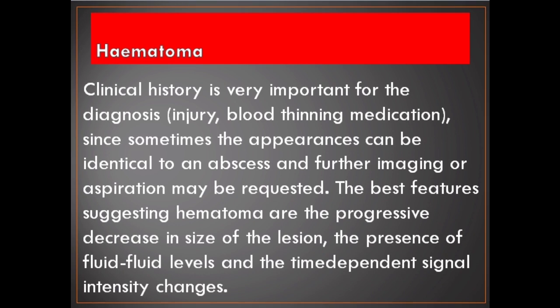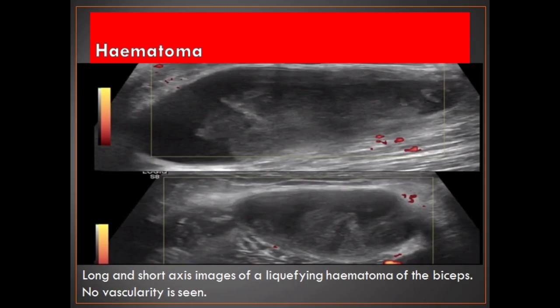Clinical history is very important for the diagnosis — injury, blood thinning medication — since sometimes the appearances can be identical to an abscess and further imaging or aspiration may be requested. The best features suggesting hematoma are the progressive decrease in size of the lesion, the presence of fluid-fluid levels, and the time-dependent signal intensity changes. Long and short axis images of a liquefying hematoma of the biceps — no vascularity is seen.